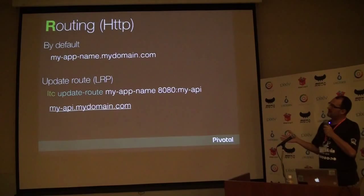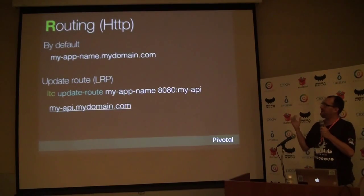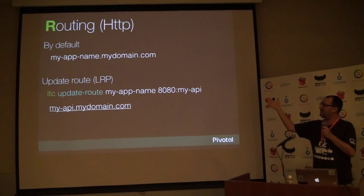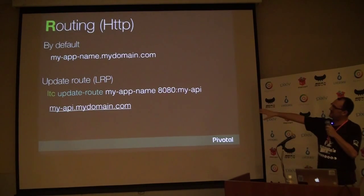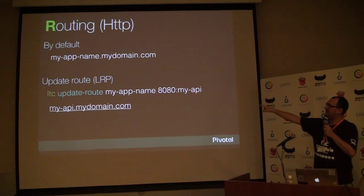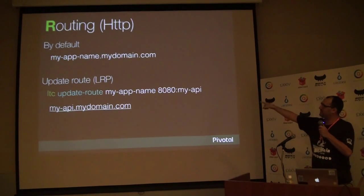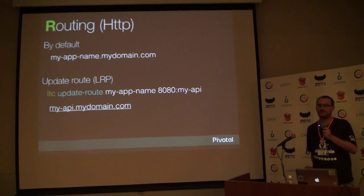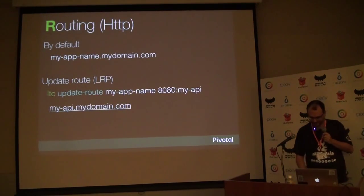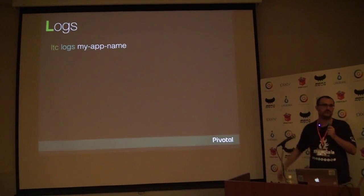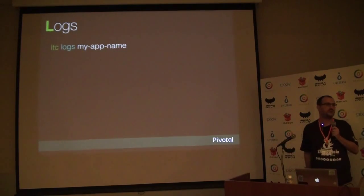About the routing layer: by default all instances go to your-app-name.domain.net. But you can change this route — for example, you can say everything coming to a certain port of your containers goes to my-api.domain. And for logs, it's pretty straightforward: 'ltc logs [app-name]'.